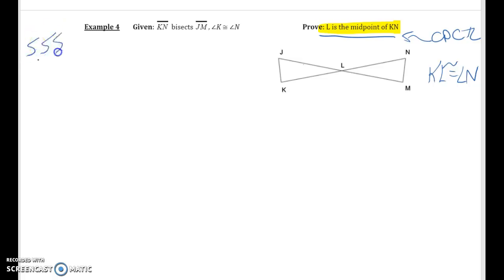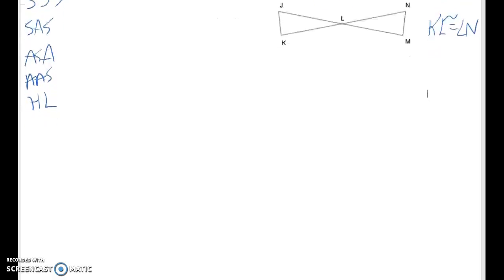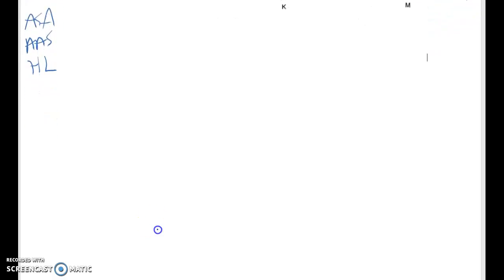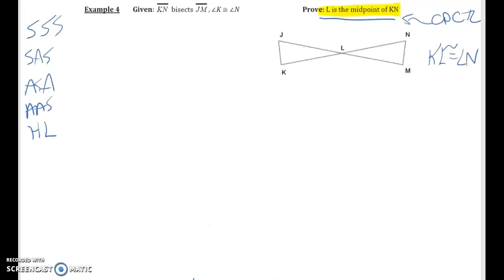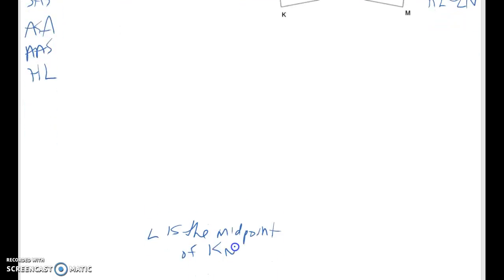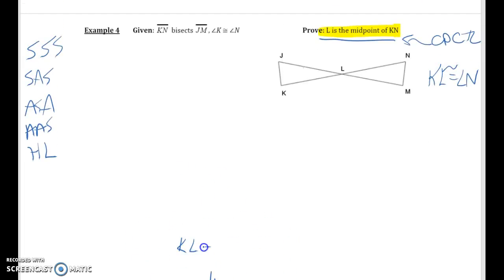So again we're going to start with our methods on the side: angle angle side, hypotenuse leg. And again with the flow proof, since I kind of know where I'm going with it, I know I'm going to end with L is the midpoint of KN. I can fill that in, and I know that is going to come from KL congruent to LN.